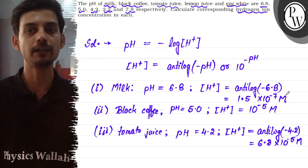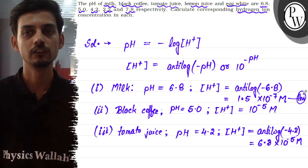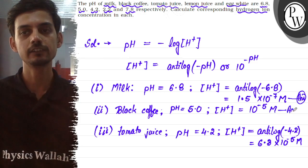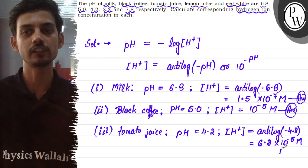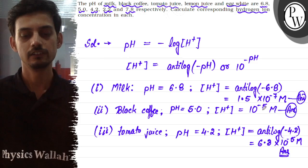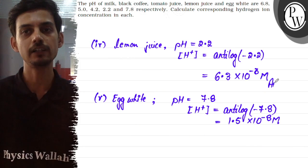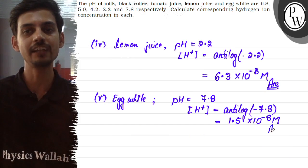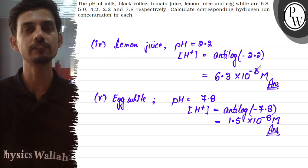So these are the answers of all five parts. This is the answer for the first part, this is the answer for the second part, this is the answer for the third part, this is the answer for the fourth part, and this is the fifth and final answer. Hope this clears the question. Best of luck.